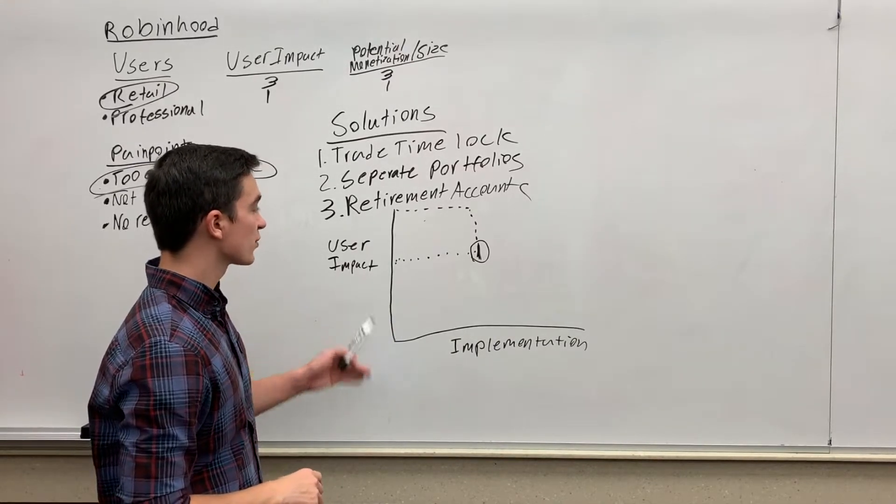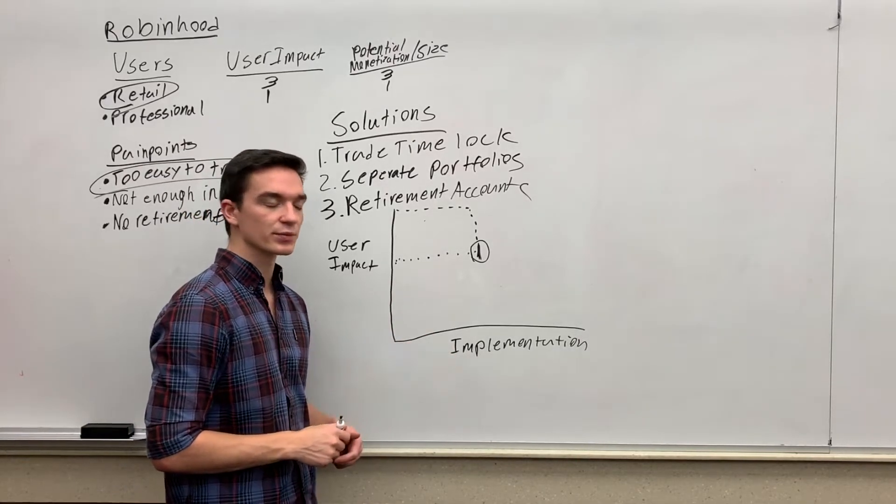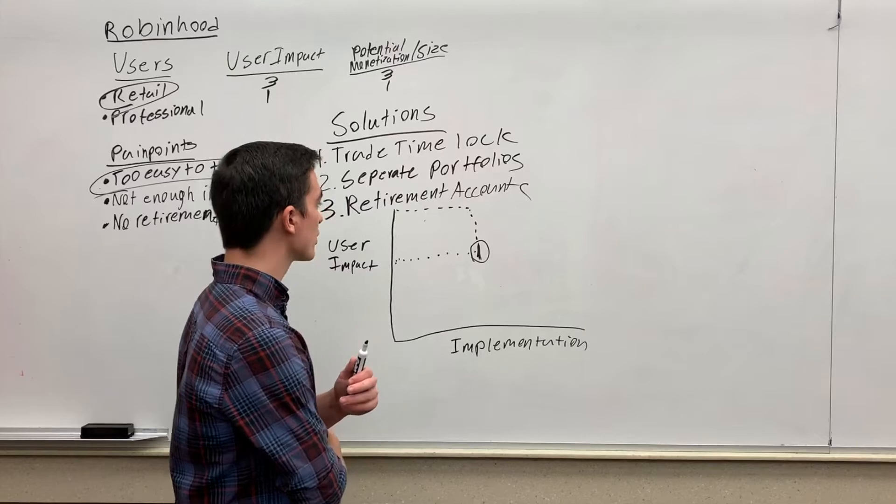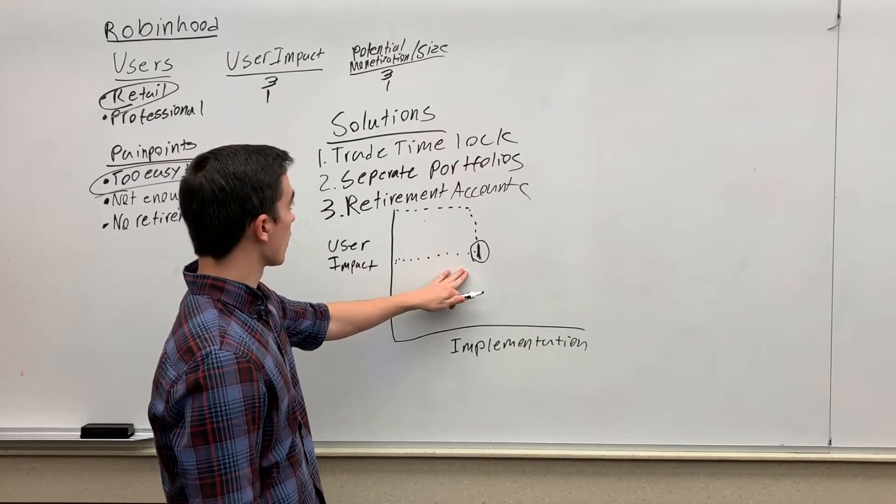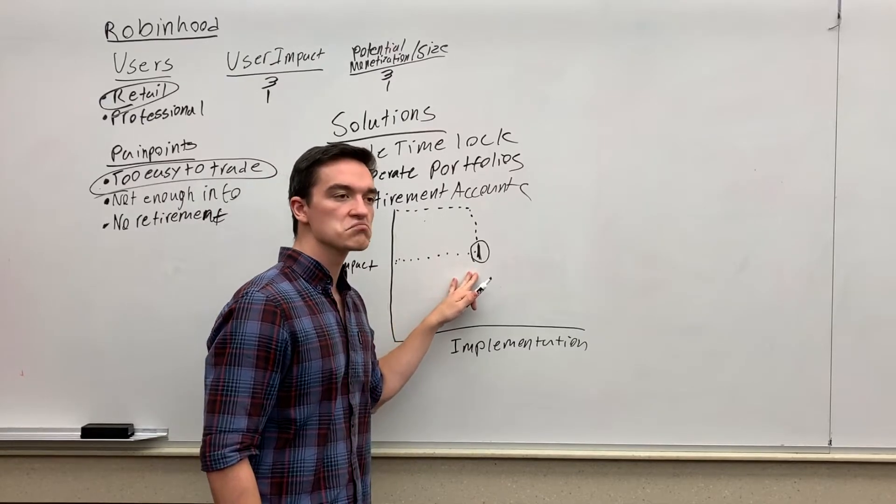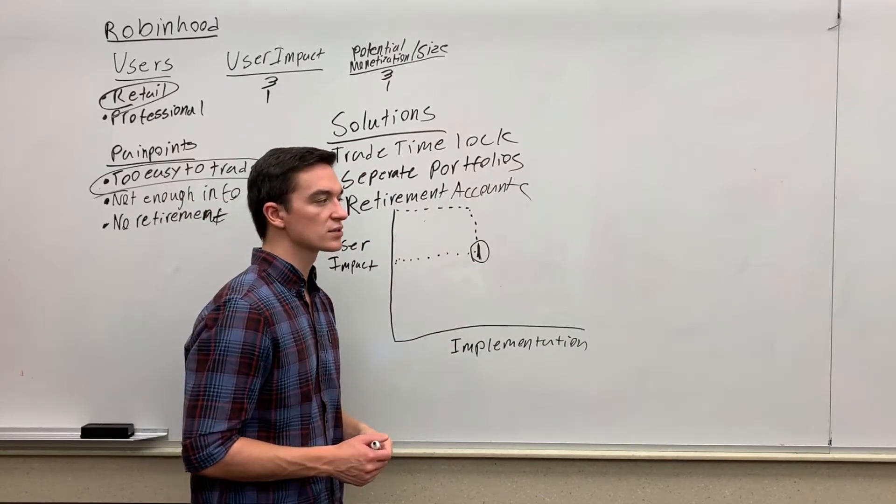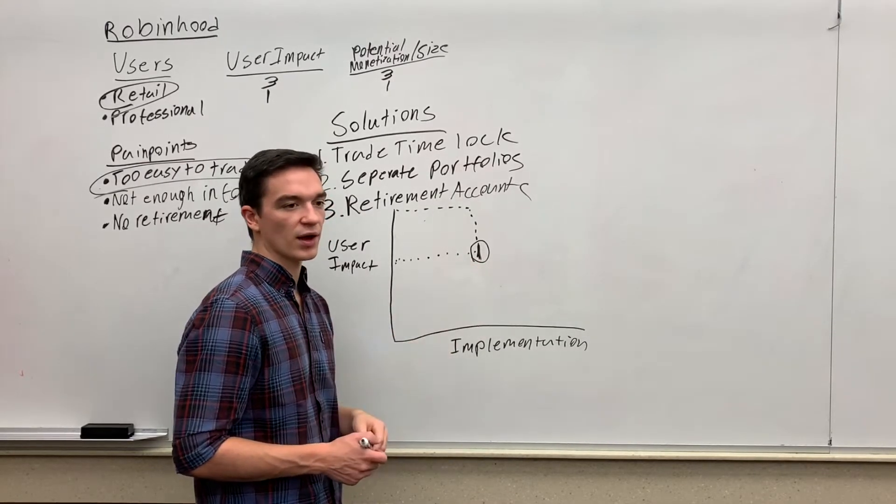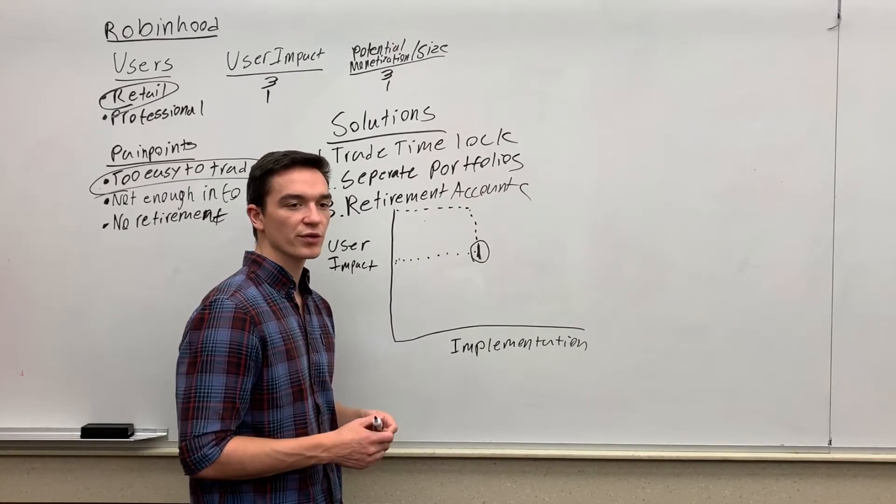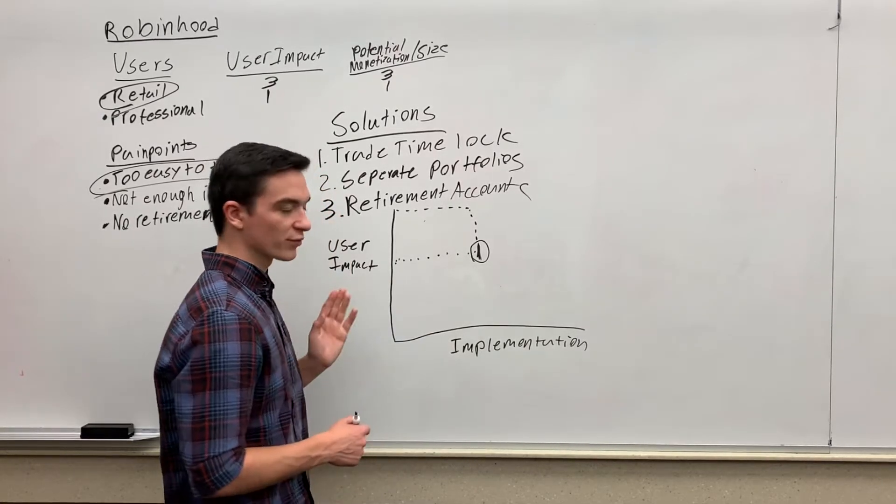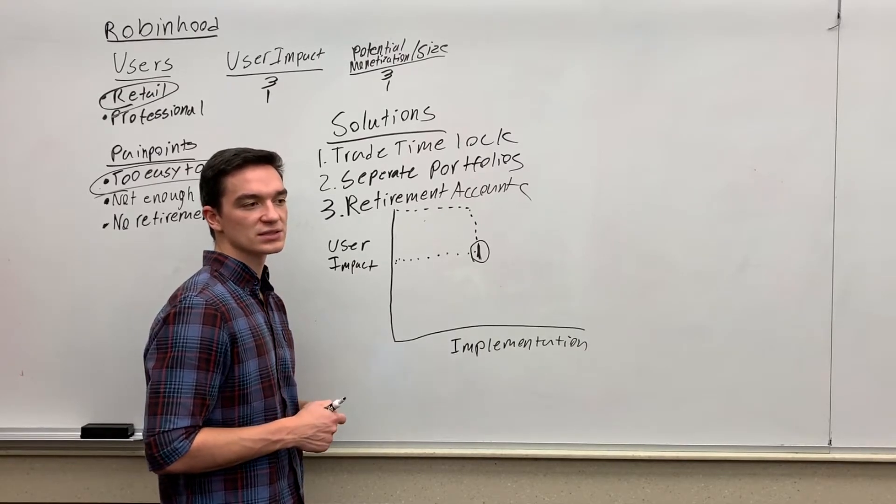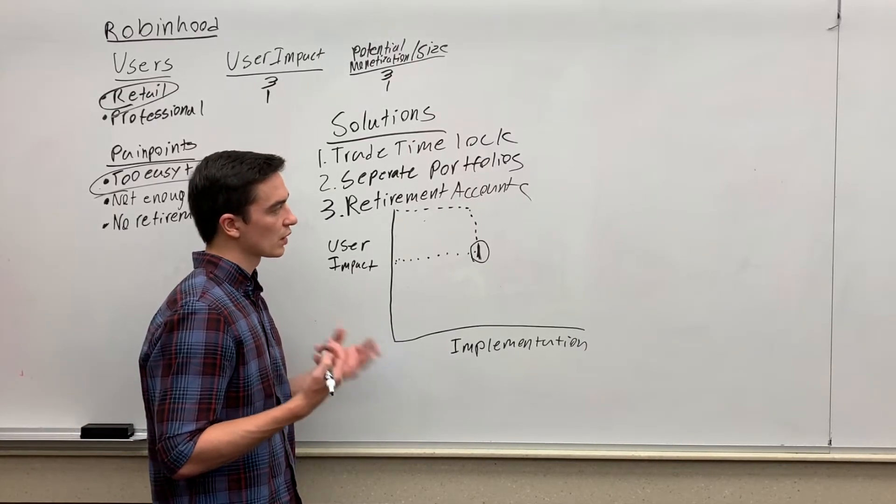So separate portfolios—again, I think it has a pretty easy ease of implementation. It's just changing up the UI a little bit, adding that new feature. The way trades are placed on the backend are still pretty similar. So I would rank the separate portfolios on about the same level of ease of implementation as the trade time lock. I might rank it a little bit easier, to be honest, because with the trade time lock, if we're going to have people create new passwords, I think that's going to start to become more complicated. We're going to need to store those, we'll have to worry about security with them. So I actually think separate portfolios are going to be easier. There might also be some legal ramifications with trade time lock. I'm not sure what the SEC implies, but yeah, I think separate portfolios would be a bit easier.